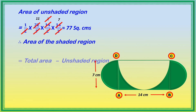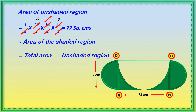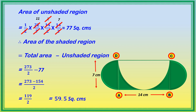Therefore, area of the shaded region equals total area minus unshaded region. Total area is 273/2, minus unshaded region 77, gives 273/2 minus 154/2 equals 119/2 equals 59.5 square centimeters. So the area of the shaded region is 59.5 square centimeters.